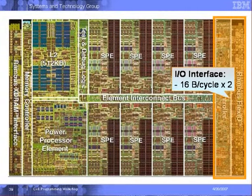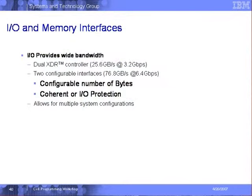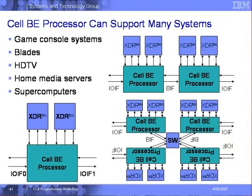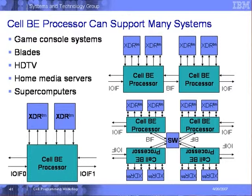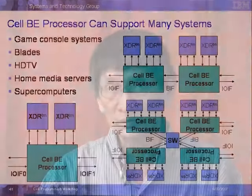For I/O, we have a 16-byte per cycle interface — two Flex I/O ports, one for I/O and one for the memory controller. In typical system configurations, you can connect two processors together with XDR memory. On the right side, you can put two or four together via a switch to form an SMP system — the maximum SMP configuration is four processors. If you go beyond four, you use the I/O interface to hook systems together and form a cluster, which can scale as large as the application requires.